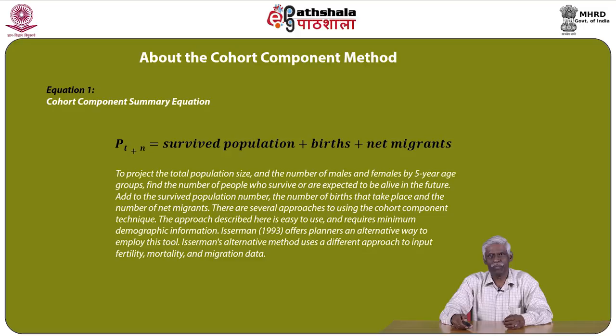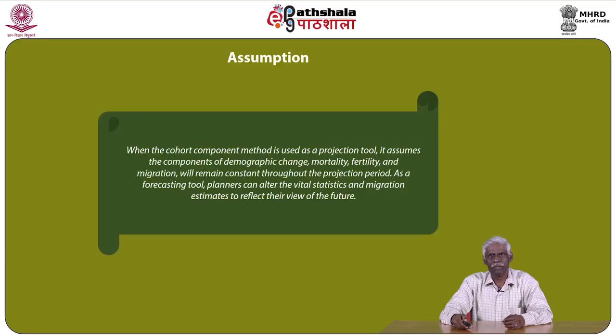To project the total population size and the number of males and females by 5-year age groups, we need to find the number of people who are expected to be alive in the future, and add to the survived population the number of births and the number of net migrants. The approach described here is easy to use and requires minimum demographic information. However, certain assumptions must be considered when using the cohort component method as a projection tool — it assumes that mortality, fertility, and migration will remain constant throughout the projection period.